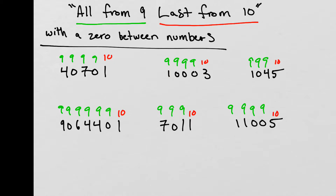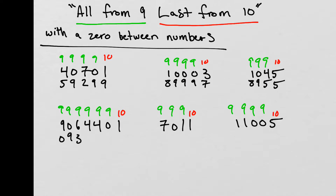Working through the zero-in-between examples: 9 minus 4 is 5, 9 minus 0 is 9, 9 minus 7 is 2, 9 minus 0 is 9, and 10 minus 1 gives us 9. Second problem: 9 minus 1 is 8, 9 minus 0 is 9, 9 minus 0 is 9, 9 minus 0 is 9, and 10 minus 3 gives us 7. Third: 9 minus 1 is 8, 9 minus 0 is 9, 9 minus 4 is 5, and 10 minus 5 is 5. Fourth: 9 minus 9 is 0, 9 minus 0 is 9, 9 minus 6 is 3, 9 minus 4 is 5, and 9 minus 4 is 5.